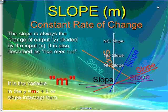So first off we have slope, which in our formula is going to be represented as m. It will always be m, and the slope is always the change of output y divided by the input x. It's also described as rise over run. It is the variable in the y equals mx plus b, or the slope intercept form.